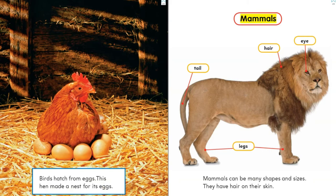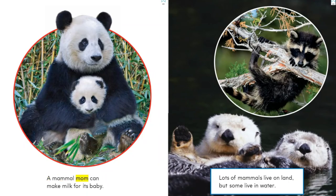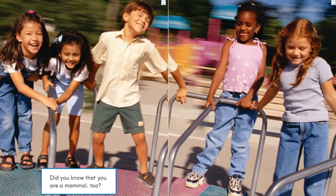Mammals. Mammals can be many shapes and sizes. They have hair on their skin. Let's look at the parts of this mammal: eye, legs, tail, hair. A mammal mom can make milk for its baby. Lots of mammals live on land, but some live in water. Did you know that you are a mammal too?